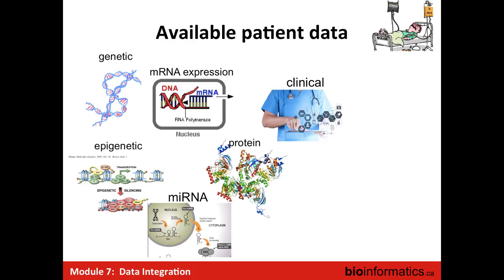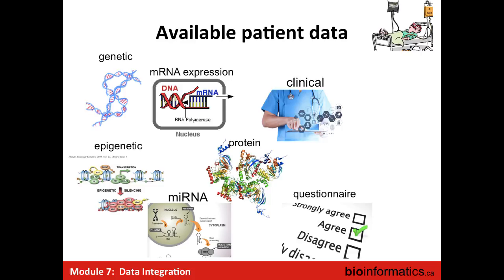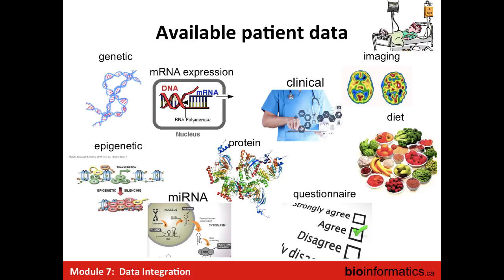On the phenotype side, you can derive different kinds of phenotypes. There's all kinds of clinical information that includes tests, questionnaire data in neuropsychiatry — if any of you work there, you've definitely seen a lot of questionnaire data — imaging, especially in neuropsychiatry, and for autoimmune disease, especially inflammatory bowel disease, you would see diet data being collected and informing decisions.